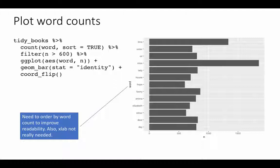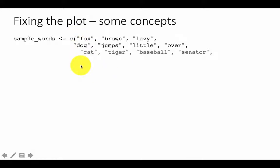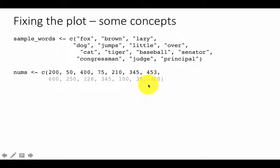So before we can look at how to change the plot to order it by the occurrence of the word, let's look at some concepts. Here, I'm just creating a vector with some sample words. So there are, I think, 14 words here, just some random words, and for each word, I've got the counts or some number, and what I want to do is to say that we want the plot ordered by these counts, not ordered in alphabetical order.